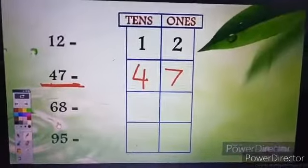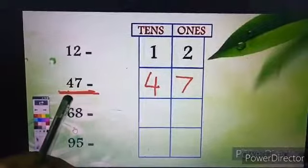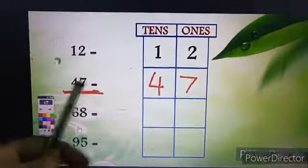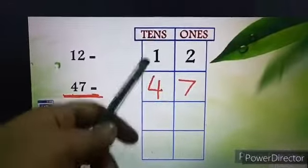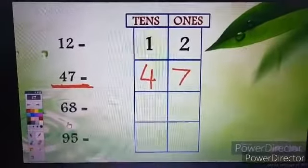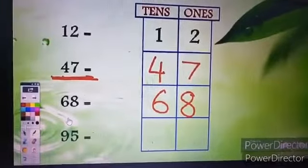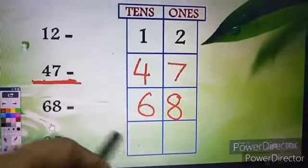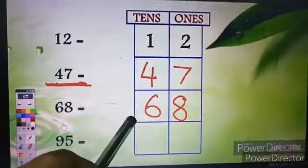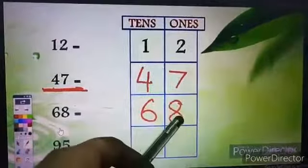So children look at this digit that is 47 and we have to make them sit in their rooms. How we will make them sit? 4 will sit in which room? Tens room and 7 will sit in ones room. After that see I have written 68. Now place 68 in their respective rooms. 6 will sit in tens room and 8 will sit in ones room.